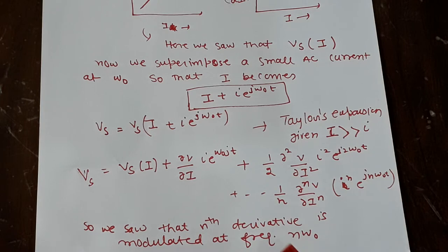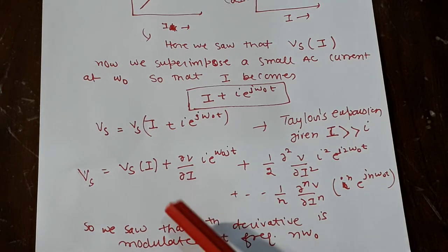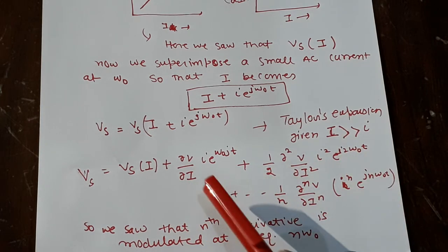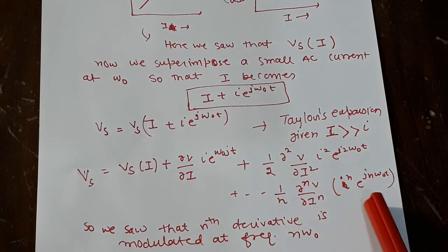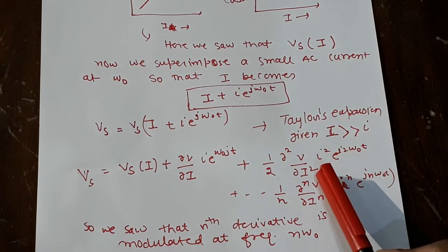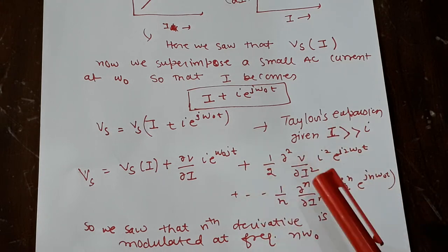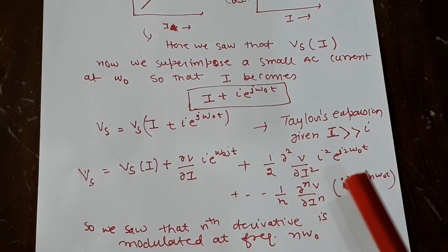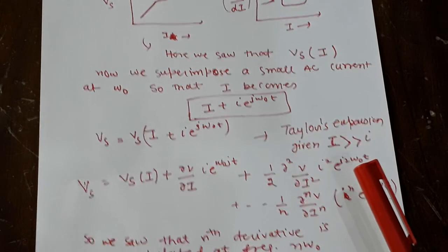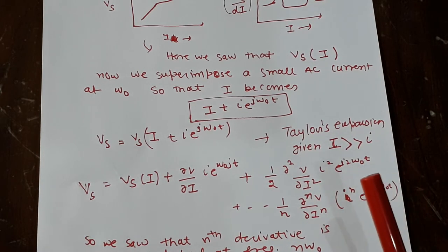Now, there is a catch. If you see, the signal becomes smaller as we move on from first derivative to second derivative to third derivative and so on because it's I. So I is already a small number, I² will become a smaller number. So the signal will become weaker and weaker. So it becomes very hard to detect, but it makes your life easy in a way that you can do anything at a time.